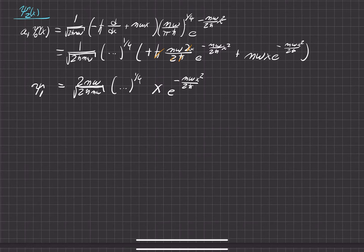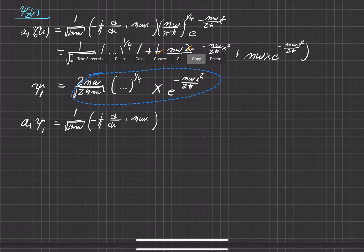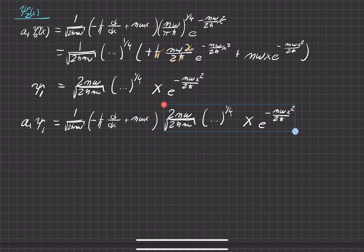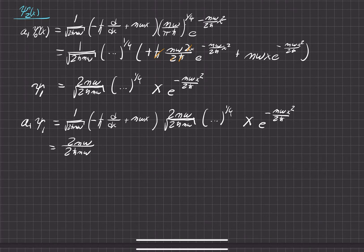I'll just label this psi sub 1 — the first excited state of the quantum simple harmonic oscillator. Now to get psi sub 2 we have to raise it again. We'll apply the raising operator acting on the first excited state. These are all constants here, so we write those down: 2m-omega over 2 h-bar m-omega, not under the square root since we had two of them, and then that big constant. Now let's apply the operator to the variable portion.